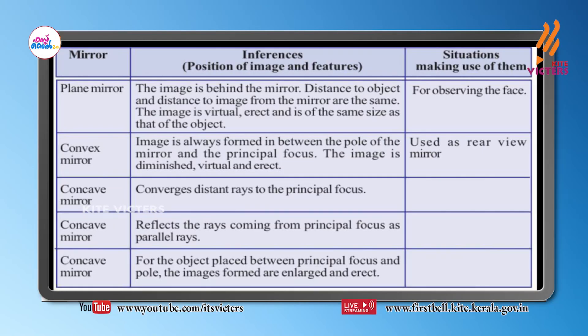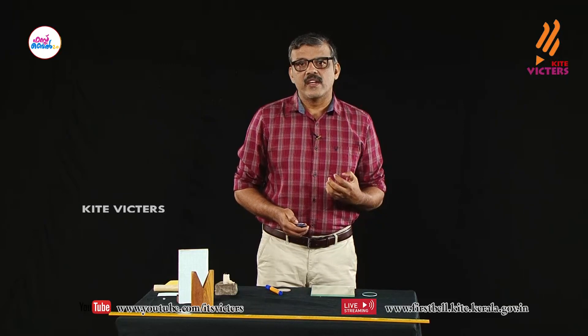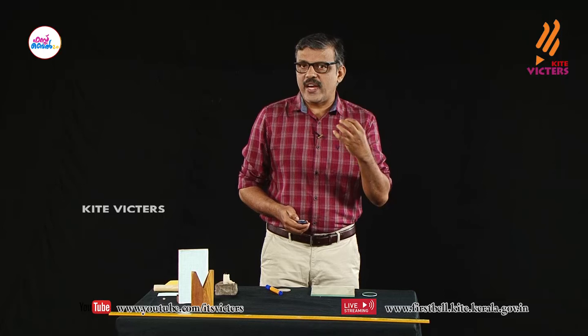The third situation: when an object is placed between the principal focus and the pole of a concave mirror, the image formed is enlarged, erect, and virtual. We make use of this property when using a concave mirror as a shaving mirror — placing the object between F and P gives an enlarged, erect, virtual image.